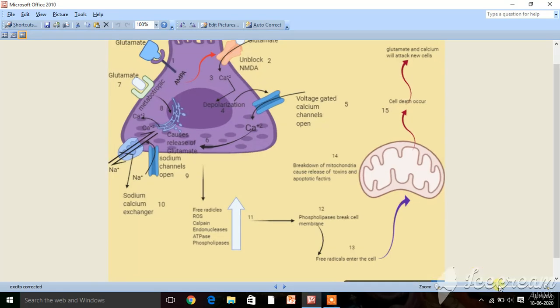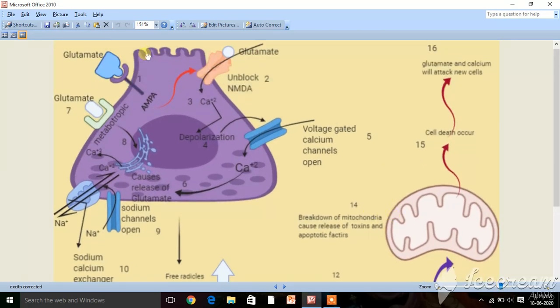Coming to step 1, glutamate binds to the AMPA receptors, and this causes unblocking of NMDA receptors and calcium influx occurs.